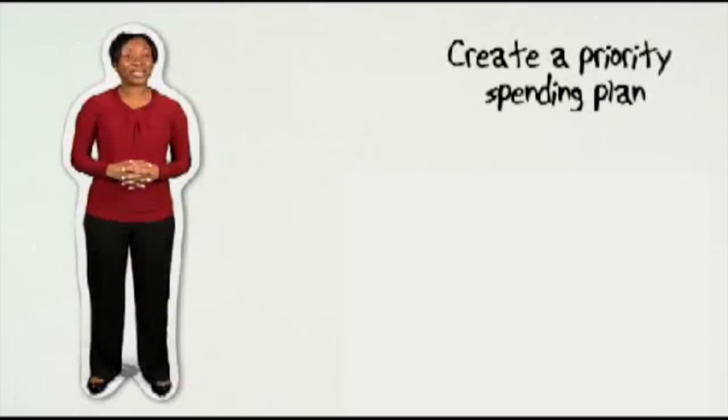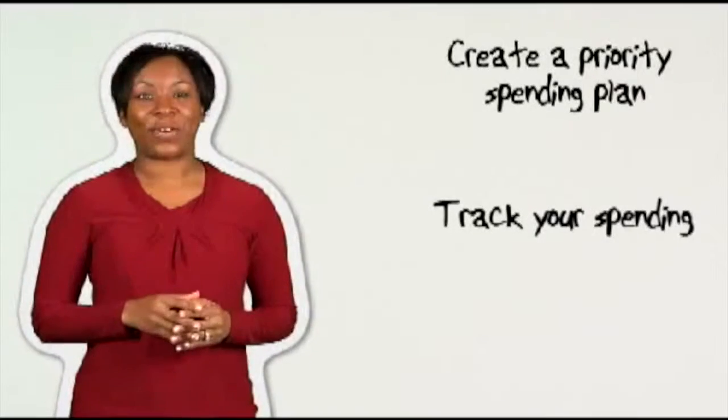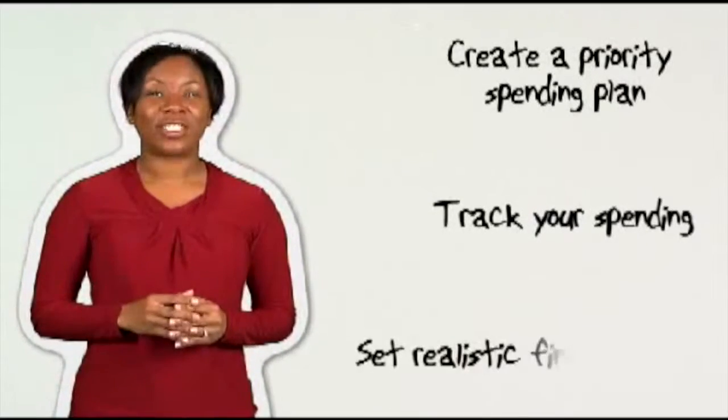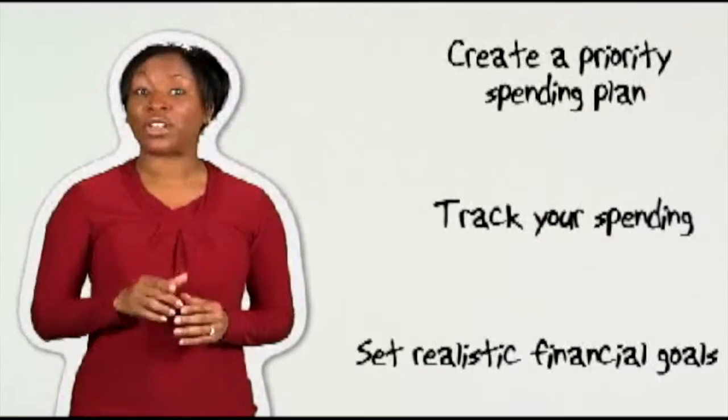First, create a priority spending plan. This will help you to pay your bills on time and avoid late fees. Second, track your spending for 30 days. This will help you to know where your money is going. And third, set realistic financial goals. This will keep you on track for what's important to you and your family.